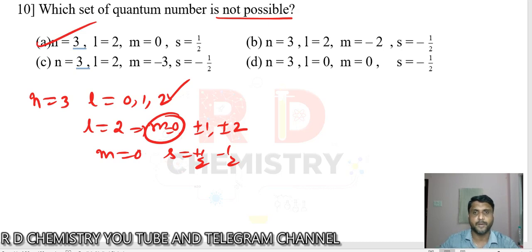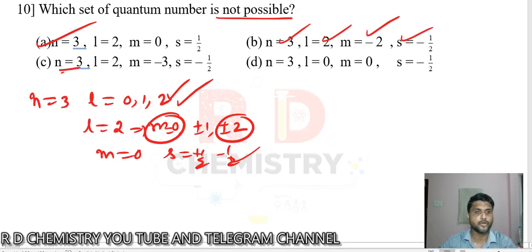What about the second one? When n = 3, l = 2 already possible. When l = 2, m = -2 already possible. When m = -2, s = -1/2 is also possible. Let's see option C. When n = 3, l = 2 possible. When l = 2, m = -3 is not possible. Plus or minus 3 is not possible. Therefore, l = 2, so C is not possible. C is the answer.